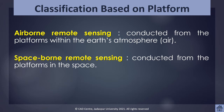Ground-based sensors are often used to record detailed information about the surface, which is compared with information collected from aircraft or satellite sensors. In some cases, this can be used to better characterize the target being imaged, making it possible to better understand the information in the imagery. Sensors may be placed on a ladder, a tall building, cranes, etc.